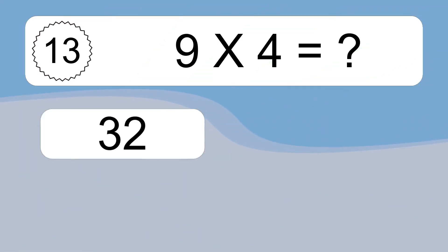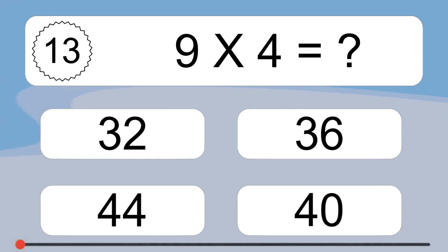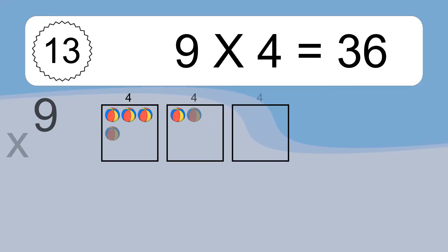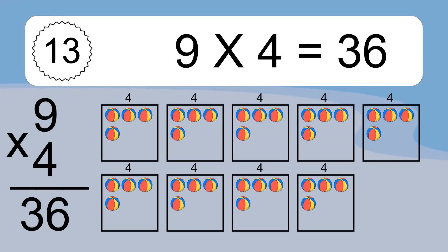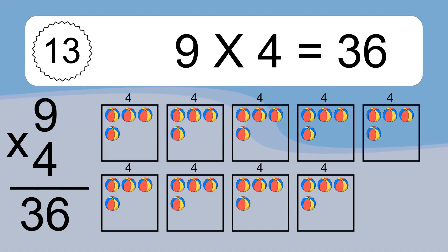9 times 4 equals what? 9 times 4 equals 36. We have 9 boxes, and each box has 4 colorful balls inside. If you count all the balls in all the boxes together, you will have 9 times 4 balls. This equals 36 balls.